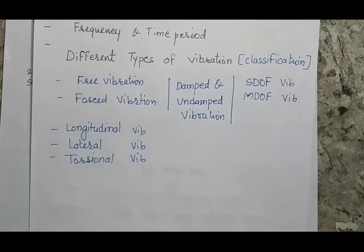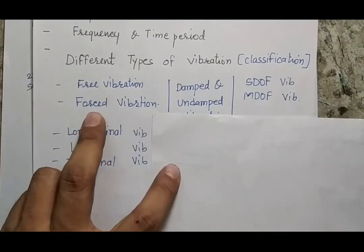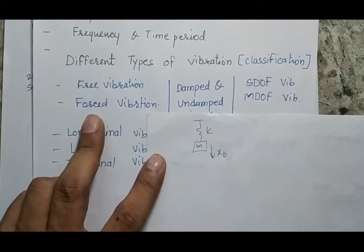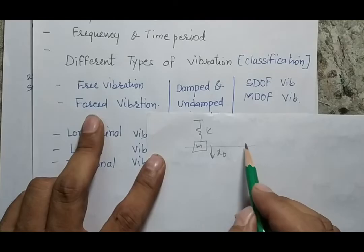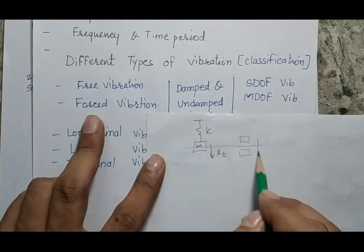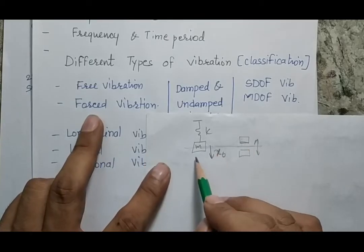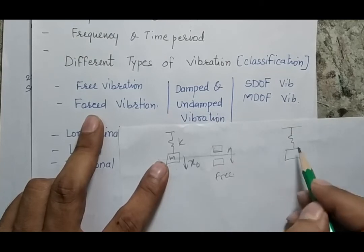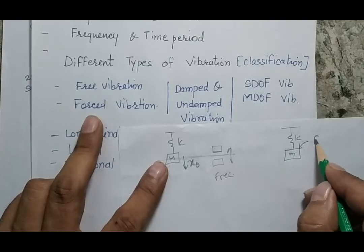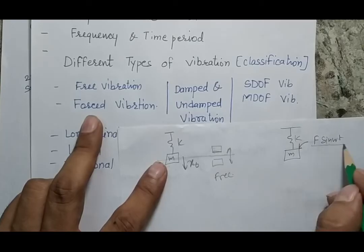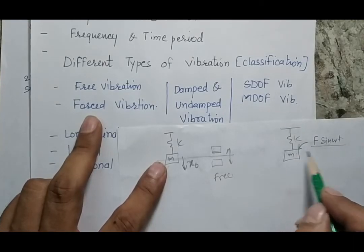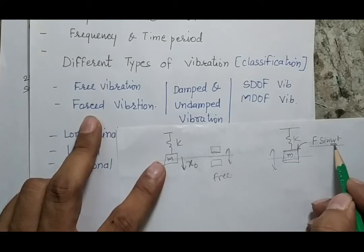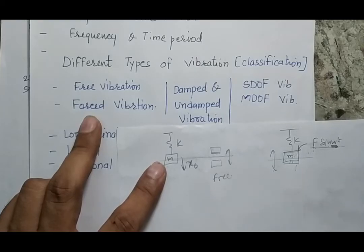Now let's classify different vibratory systems. Free vibration occurs when an initial deflection x0 is given to the system and the system is released — the mass then vibrates about the mean position without any external force. On the other hand, if a harmonic force F·sin(omega·t) is continuously applied to the spring-mass system, the body vibrates about the mean position at the frequency of the external excitation; such motion is known as forced vibration.